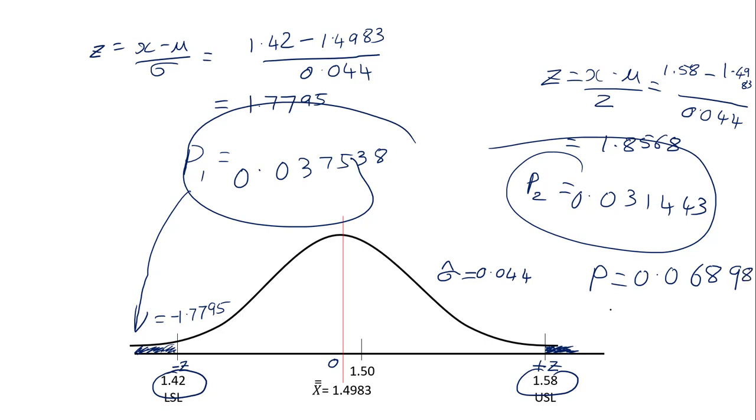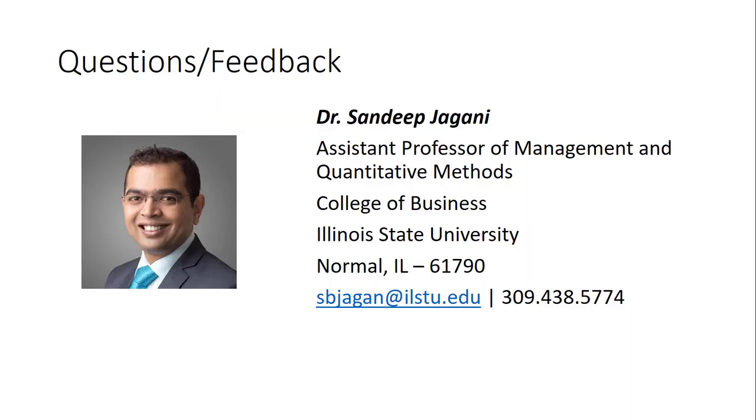The second time when we calculated we did not use Excel but we used the normal distribution table and we can see that the proportions are almost the same. I hope I made it clear how we can calculate the proportional defectives if we are given an X-bar chart. In case you have any questions or concerns please do not hesitate to reach out using the contact information on your screen or put a comment below this video. Thank you.